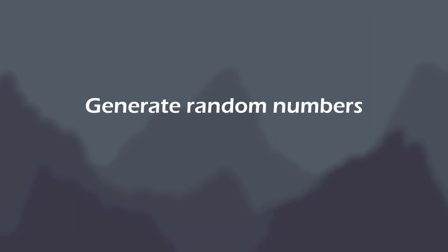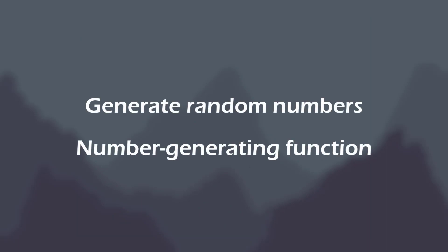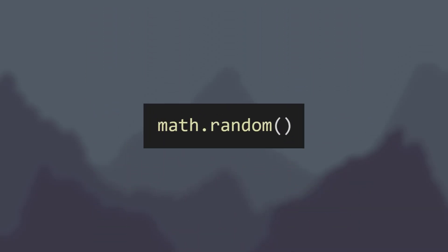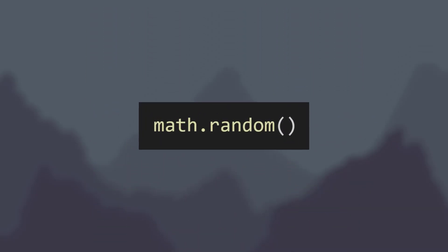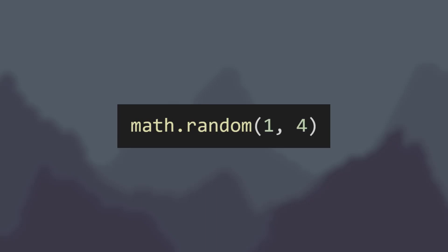When programming, you can generate random numbers very easily by simply calling a number-generating function. In Lua, this is just math.random. So when choosing a side of the screen, I can call math.random, pass it a range of 1 to 4, and it'll randomly spit out 1, 2, 3, or 4.